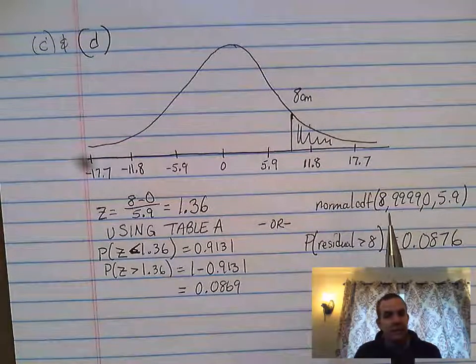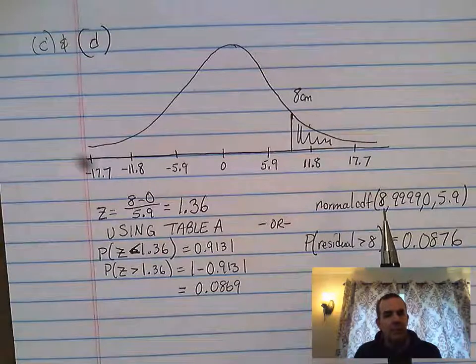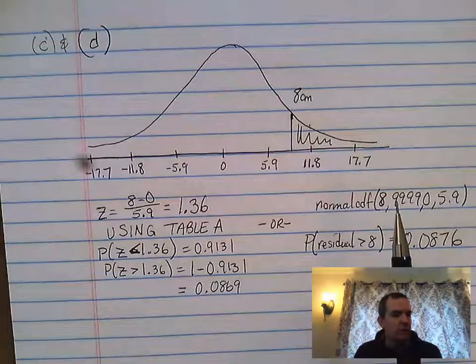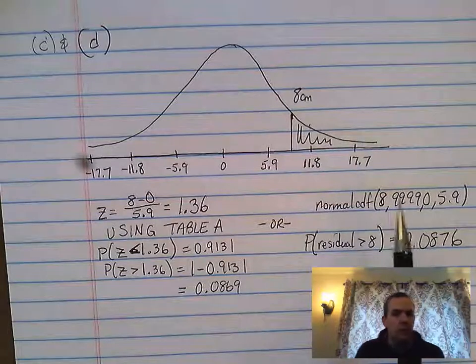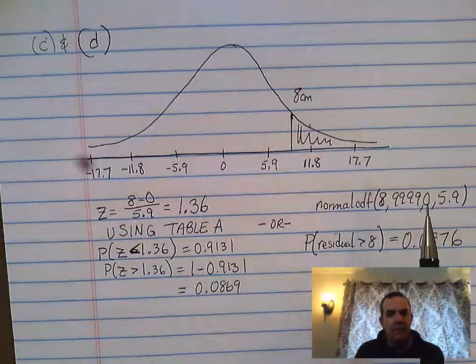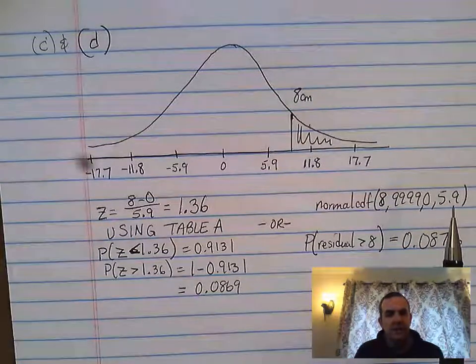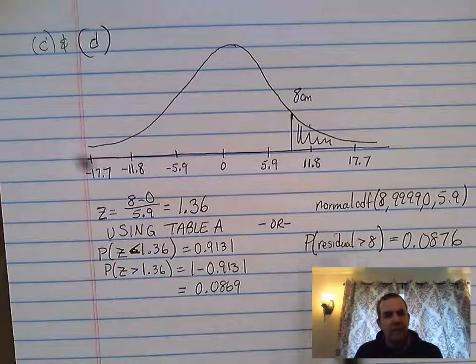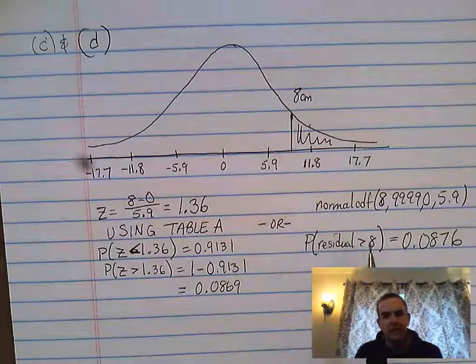I also understand that normal CDF is going to be acceptable, and if I did that I would go ahead and use the calculator. Second, vars, and when we go ahead, this one is we use our lower bound of 8, our upper bound lots of nines, our mean of 0, our standard deviation of 5.9.